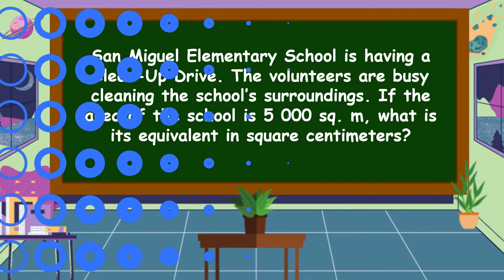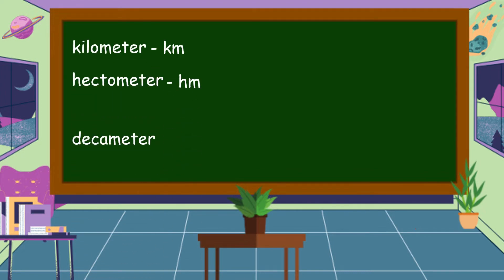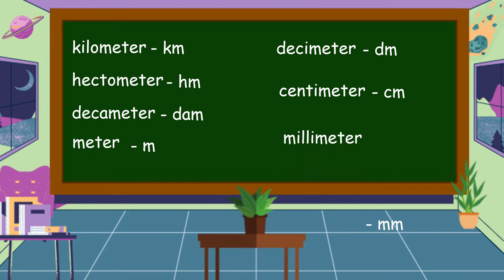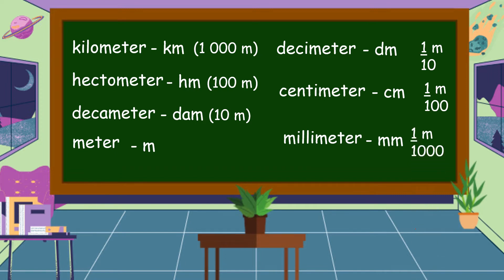If the area of the school is 5,000 square meters, what is the equivalent in square centimeters? Before we answer the problem, let's discuss the units of measurement for length: kilometer, hectometer, dekameter, meter, decimeter, centimeter, and millimeter. One kilometer equals 1,000 meters, one hectometer equals 100 meters, one dekameter equals 10 meters, one decimeter equals one-tenth meter, one centimeter equals one-hundredth meter, and one millimeter equals one-thousandth meter.